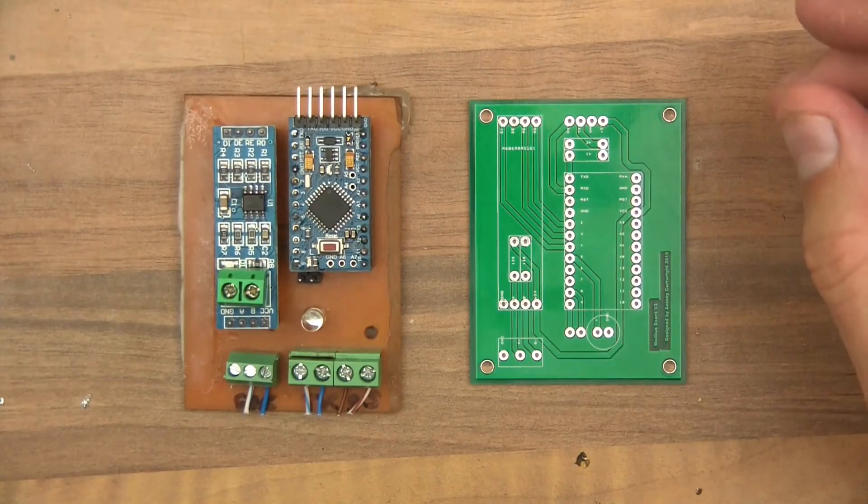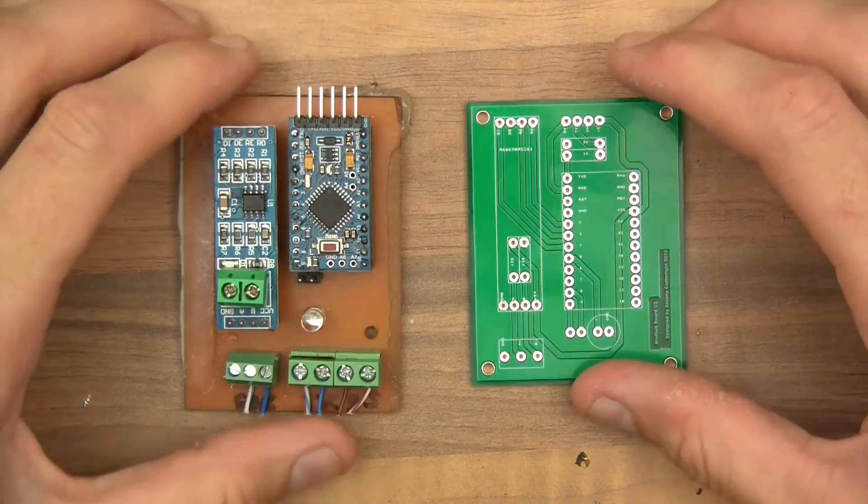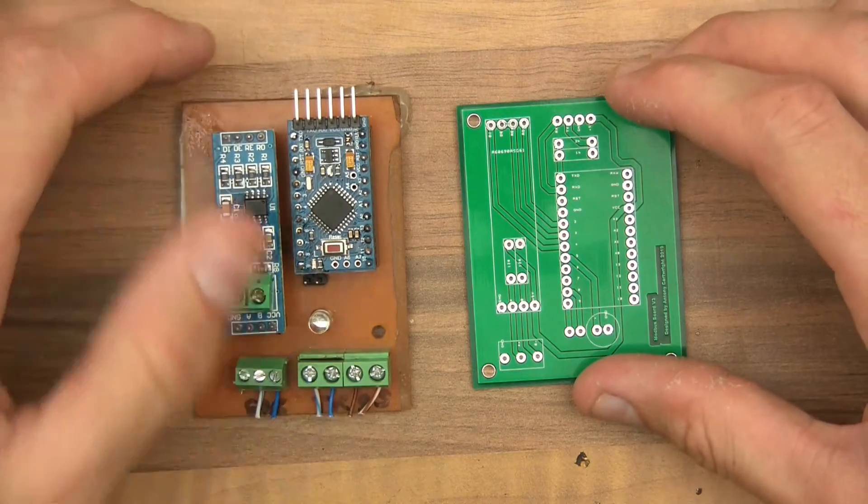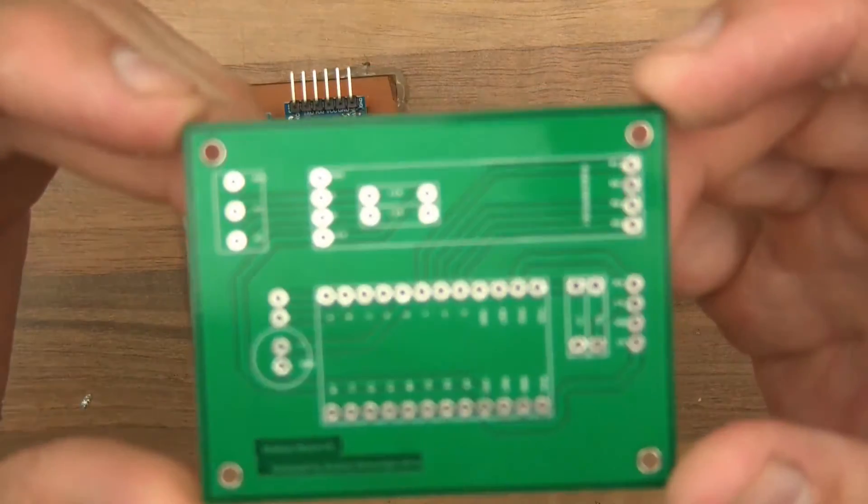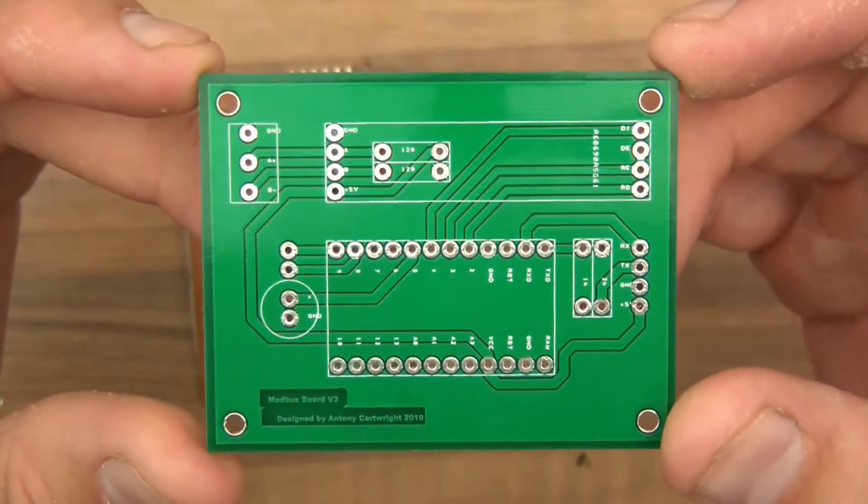OK, so here's the next board of the solar power system thing. So this is the Modbus board, and again this is another PCB from PCBGOGO.